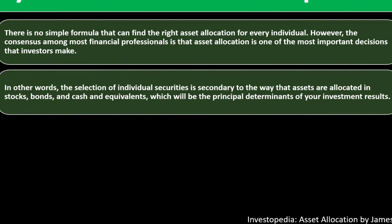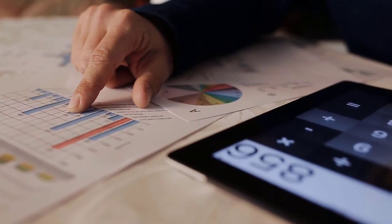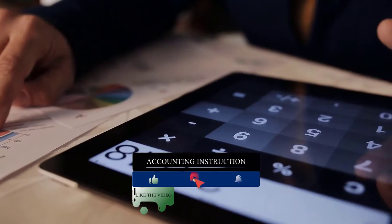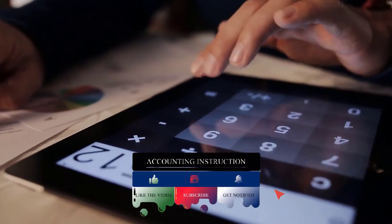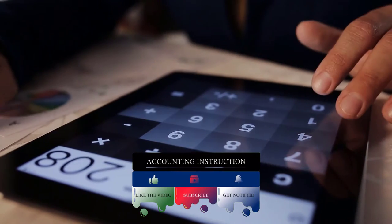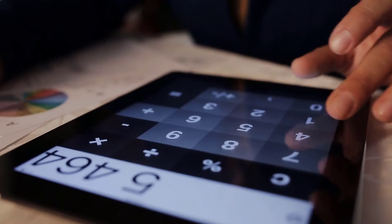The selection of individual securities is secondary to the way that assets are allocated in stocks, bonds, and cash and cash equivalents, which will be the principal determinants of your investment results. It may not be as important to be stock-picking within a portfolio when looking long-term. The simple asset allocation between principal asset classes may be the key thing to focus on.